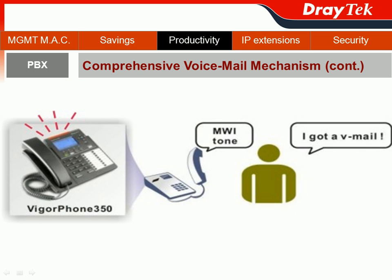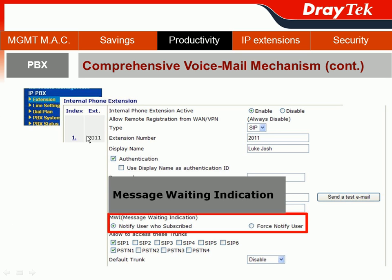Another way to remind Luke he has a voicemail is the Message Waiting Indication (MWI). When there is a voicemail to Luke's extension 2011, if Luke is using the Vigor Phone 350, he will see a flash on his Vigor Phone 350. On other phones, he will pick up the phone and hear a stutter tone — what we call the MWI tone — and he will know he has a voicemail. To configure this, go to Luke's extension 2011, check the Message Waiting Indication section, and click 'Notify user who subscribed.'